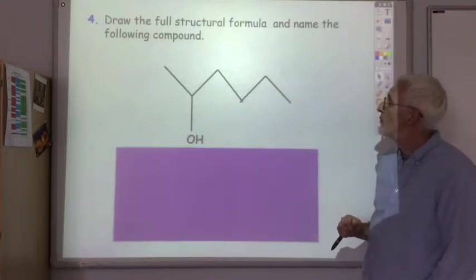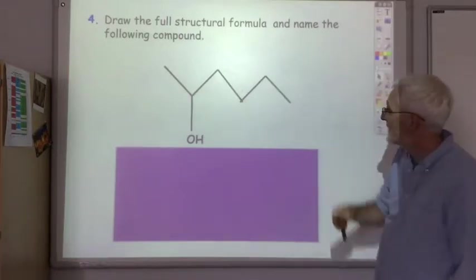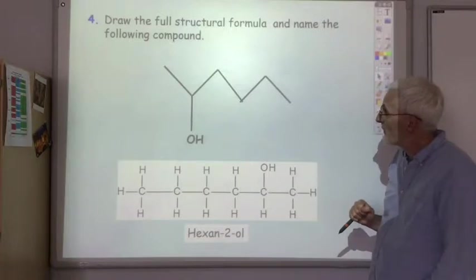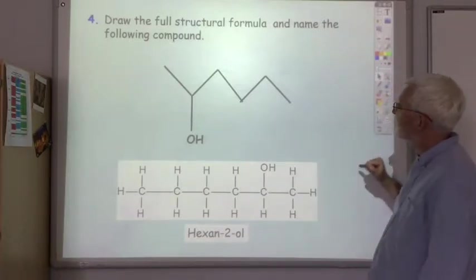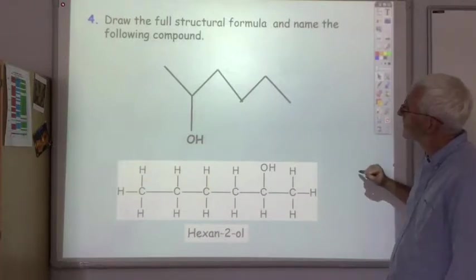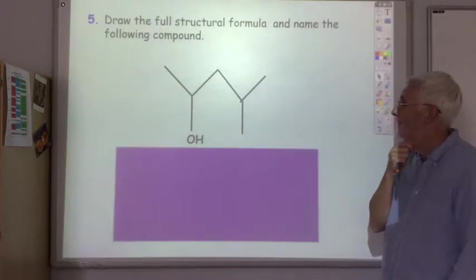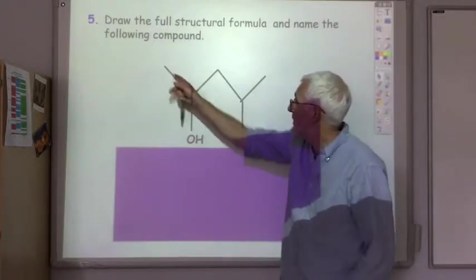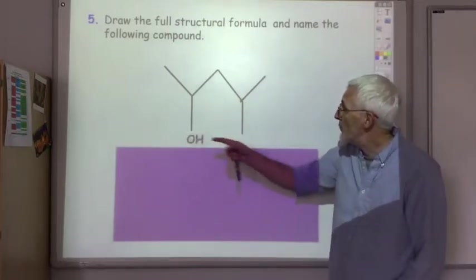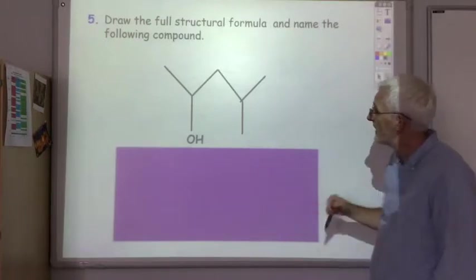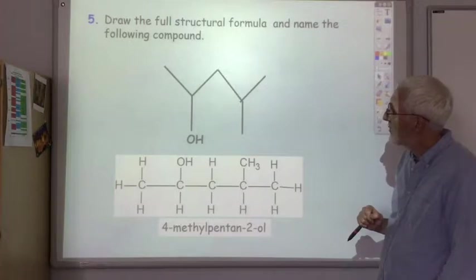This time we've got an alcohol. The main chain has one, two, three, four, five, six carbons. We've got a hydroxyl group in one position and a methyl group in the other. So it's 4-methylpentan-2-ol.